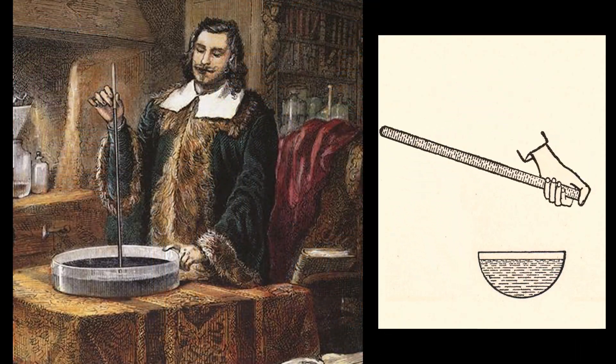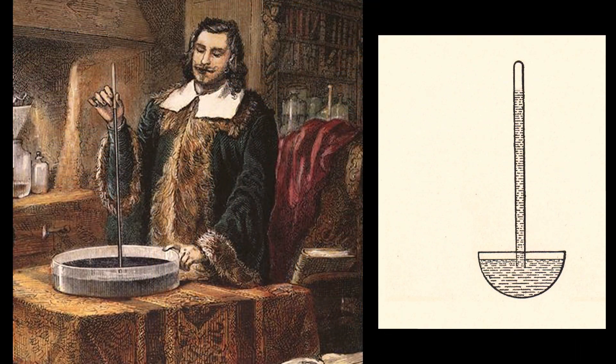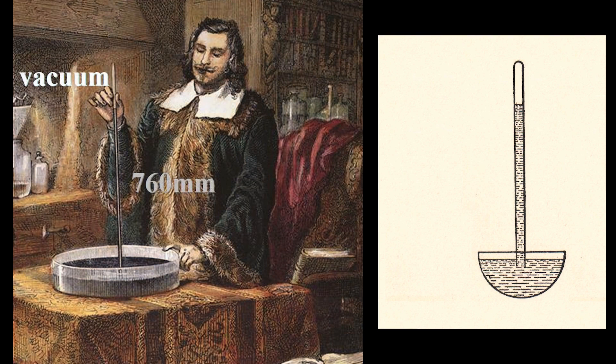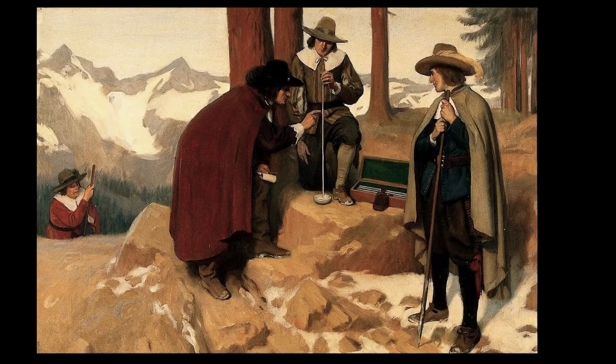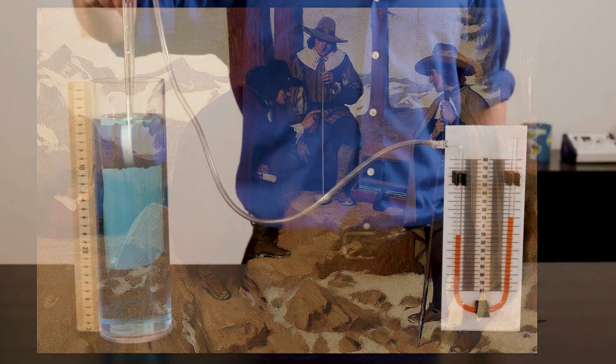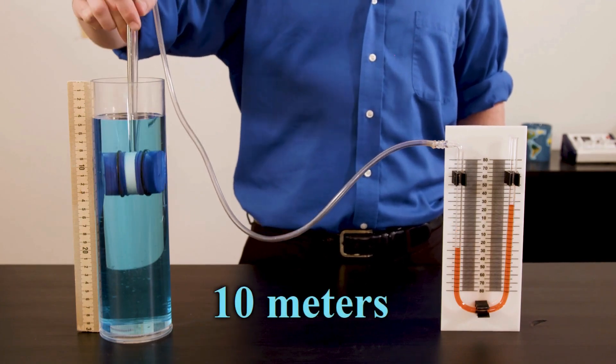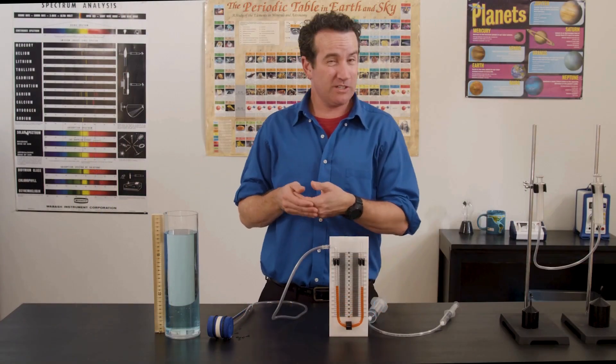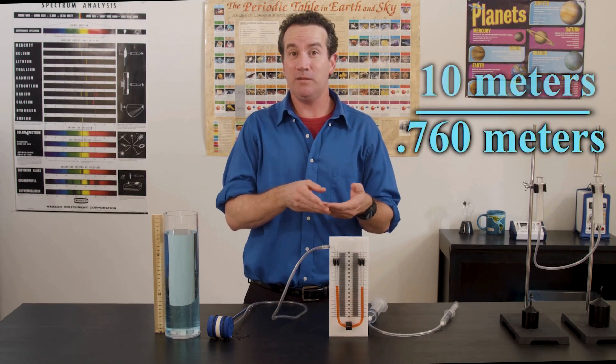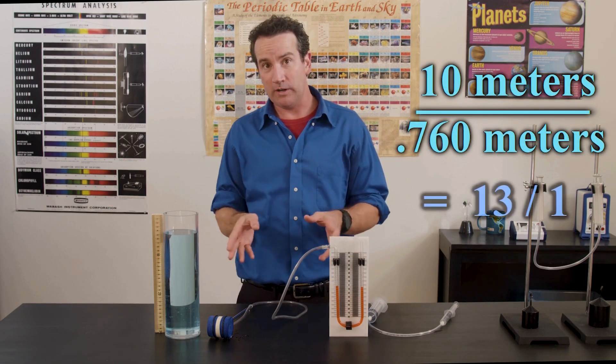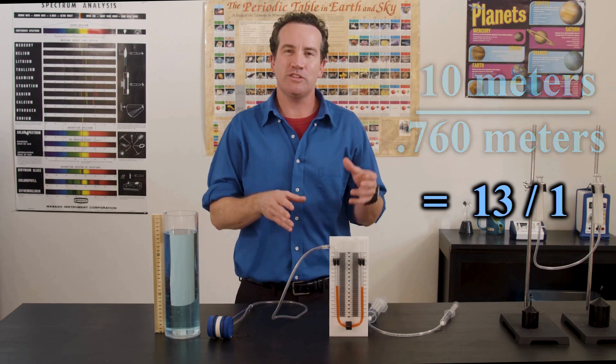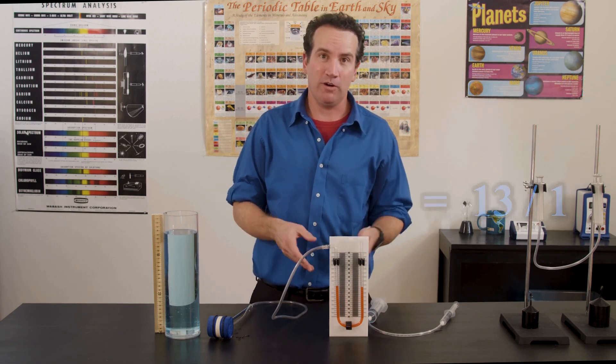Torricelli found that the atmosphere was strong enough to lift a liquid mercury column to a height of 760 millimeters. But this was less so on the mountains. If instead you use water, you can lift it to a height of about 10 meters. Now the ratio of 760 millimeters to 10 meters is about 13 to 1. Therefore, mercury has a density that is 13 times greater than that of water.